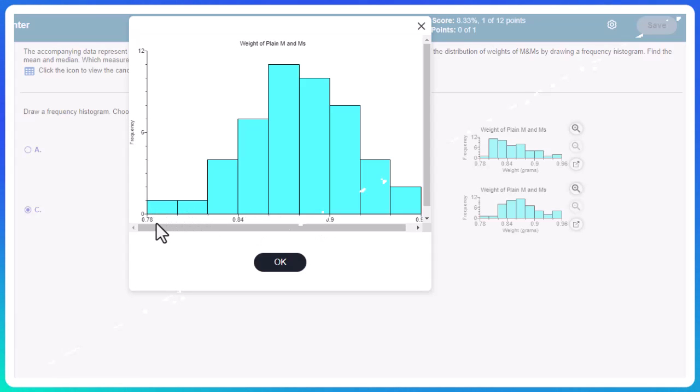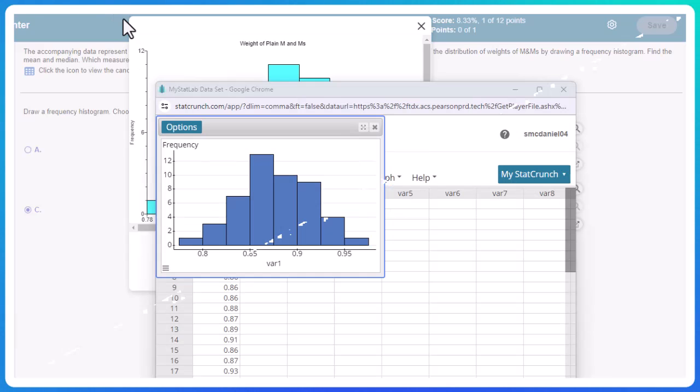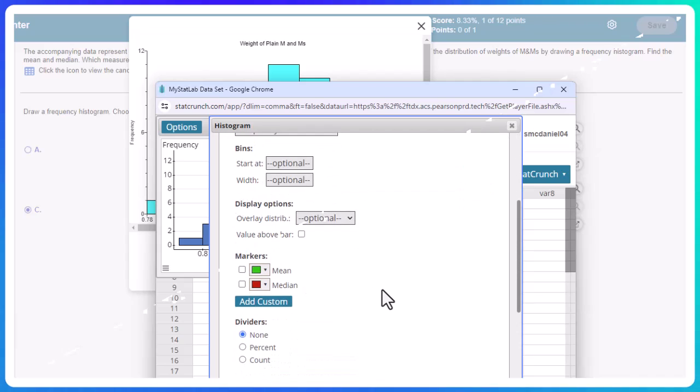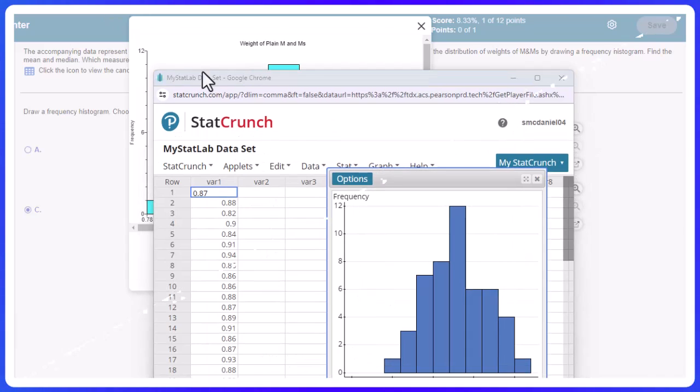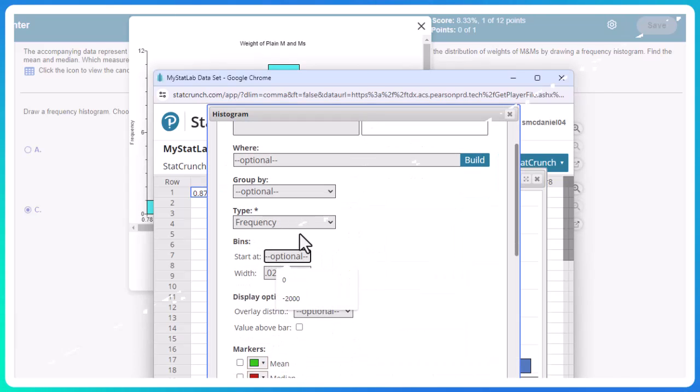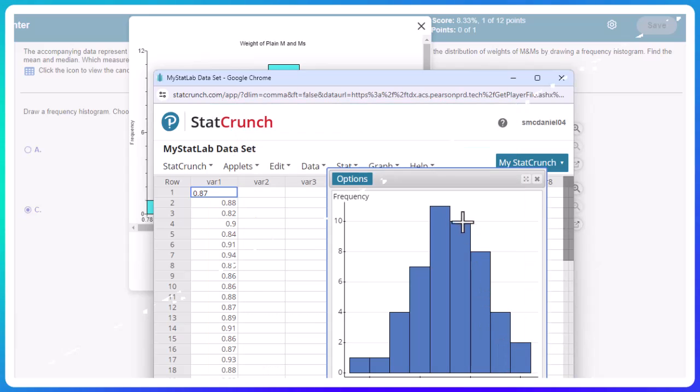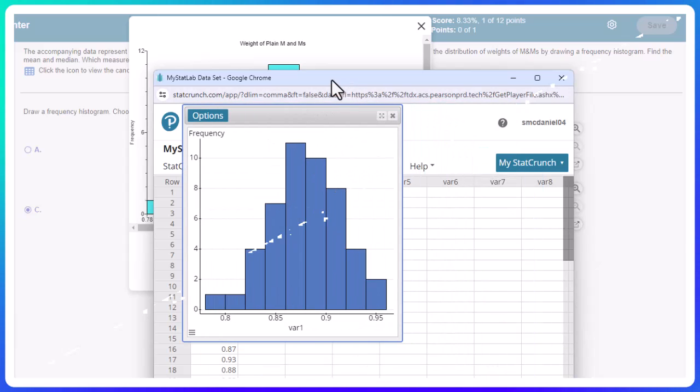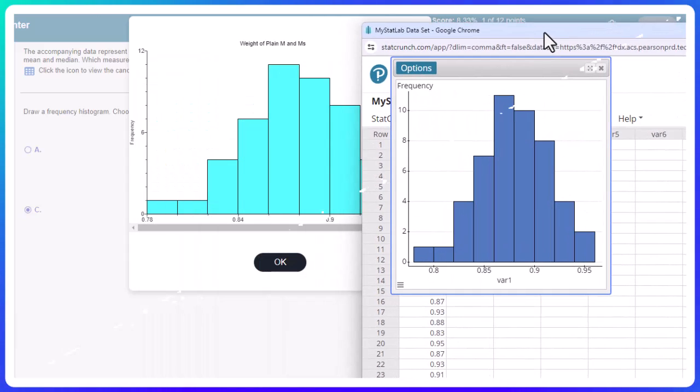Here, so their bin width is, what are we going from 0.78 to 0.84. So that's 0.06 divided by 3, so their bin width is 0.02. So if I wanted to change that, edit, and change that bin width to 0.02. And let me go ahead and change that again to start with, they did 0.78. Okay, there we go. So now it does look more like that one, right?